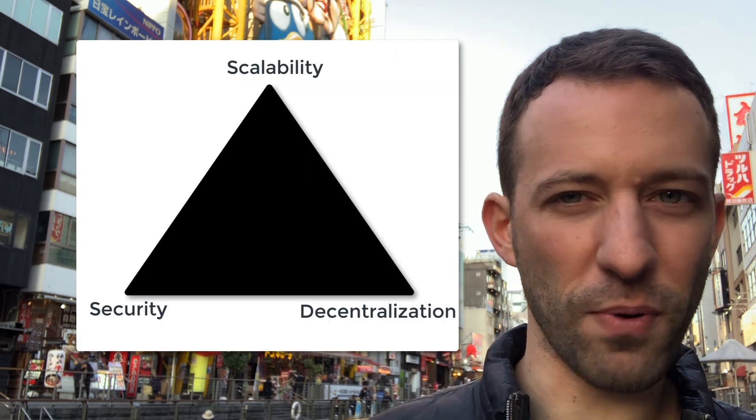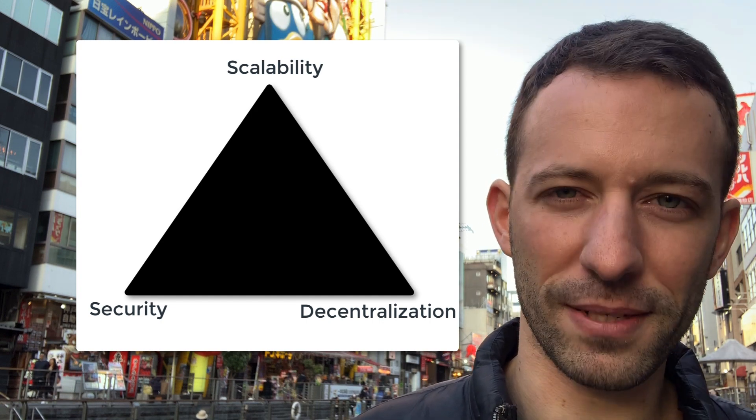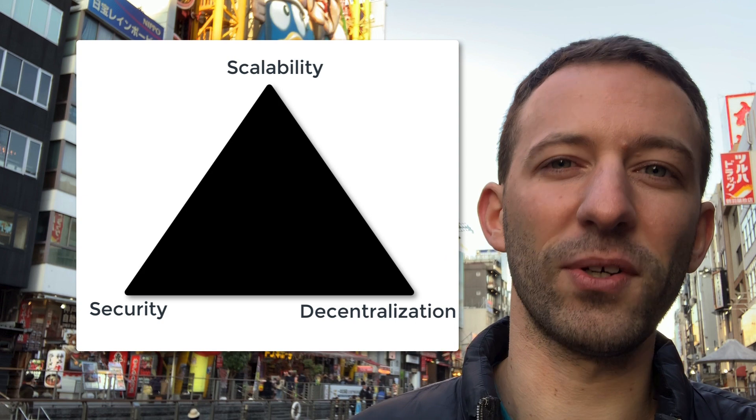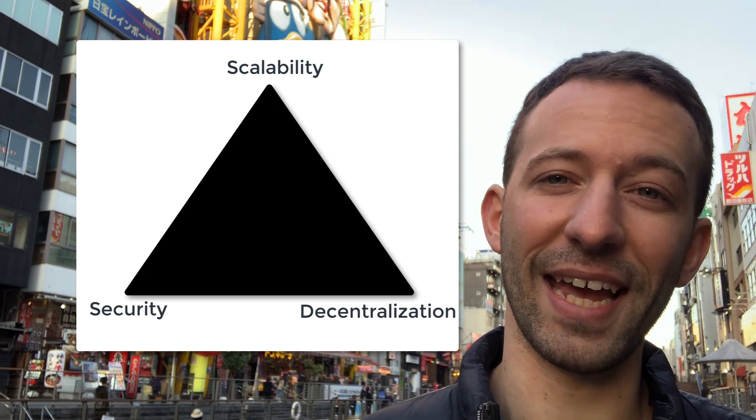Unfortunately, many blockchains are not really good at this. Let's explore the different combinations of these three properties. First: decentralization and security — that's basically the combination used by most public blockchains like Ethereum or Bitcoin. If you want to have security, you need to make it really difficult to carry out what we call a 51% attack.